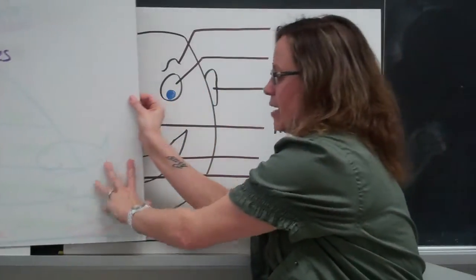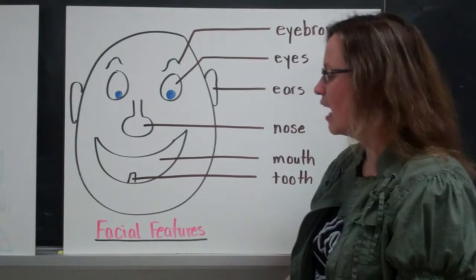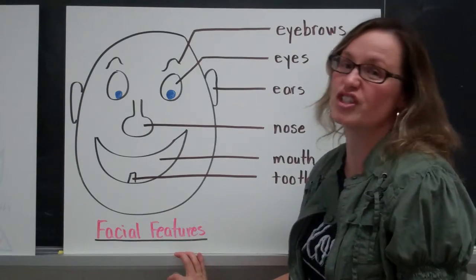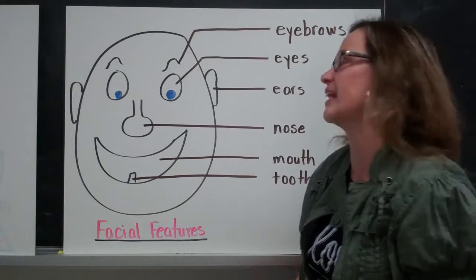So here's an example. So here is my scientific illustration. It is on facial features. I've chosen to put my title at the bottom. Again, it is underlined so it stands out from my labels.